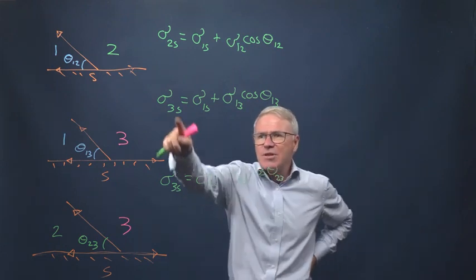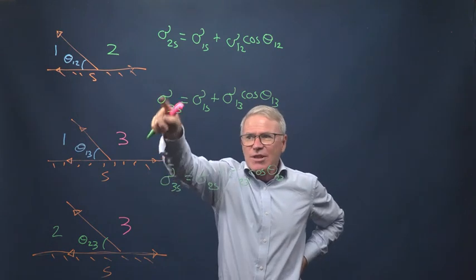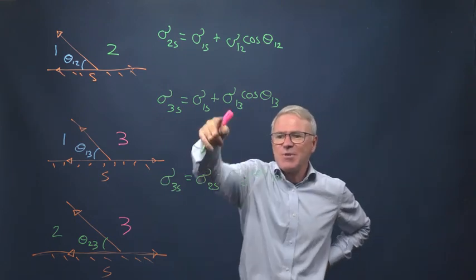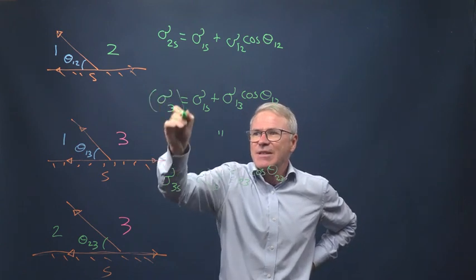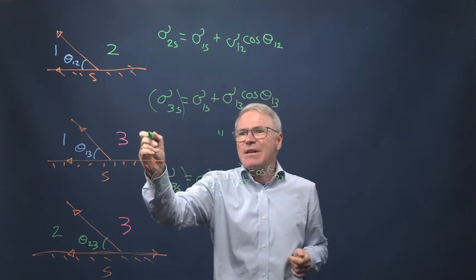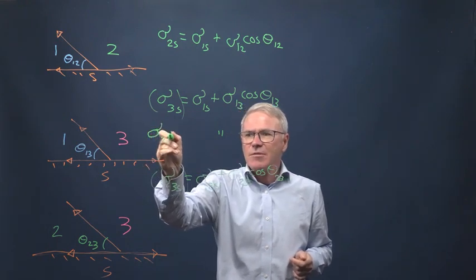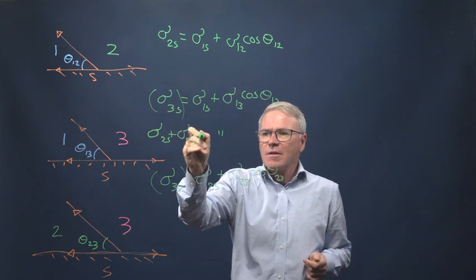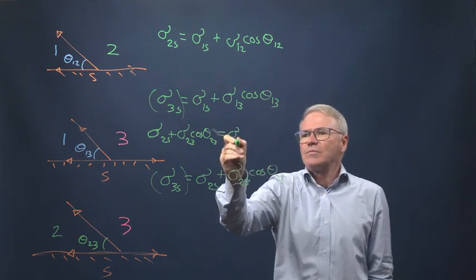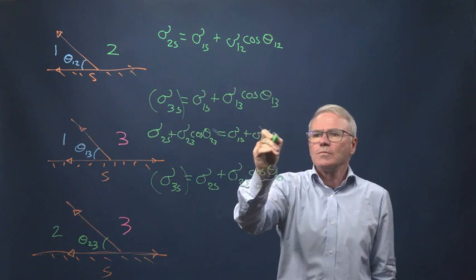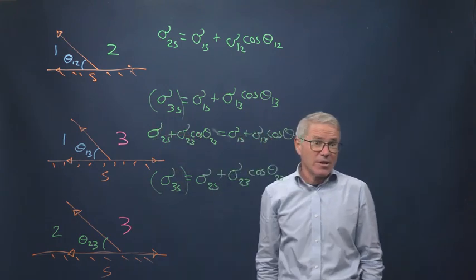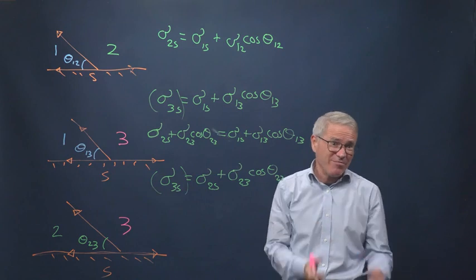You see these two equations have the same sigma 3s. So we can get rid of sigma 3s - just make this one equal to this one. So we can say this equals this. That's eliminated one of the solid surface tensions, which are difficult to measure.